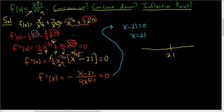The next step is to draw a number line and plot twenty-one. We also need to be aware of the domain. In this problem, x can't be zero because we have the square root of x on the bottom, and x must be greater than zero. So we put zero on the number line with an open parenthesis, and now we pick test points to plug into the second derivative.